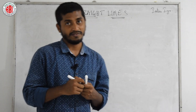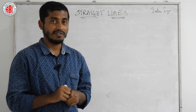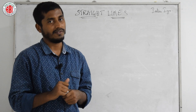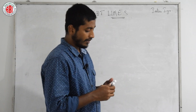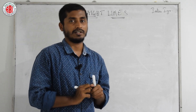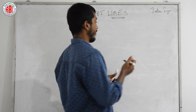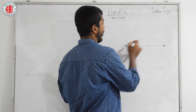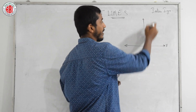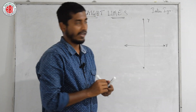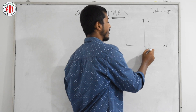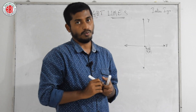Before going into the brief introduction of a straight line, we have already discussed the coordinate system and how to represent points in our previous session on transformation of axes. Let us recall: this is the horizontal axis and this is the vertical axis. The horizontal axis is called the x-axis and the vertical axis is called the y-axis. Both intersect at a particular point called the origin.